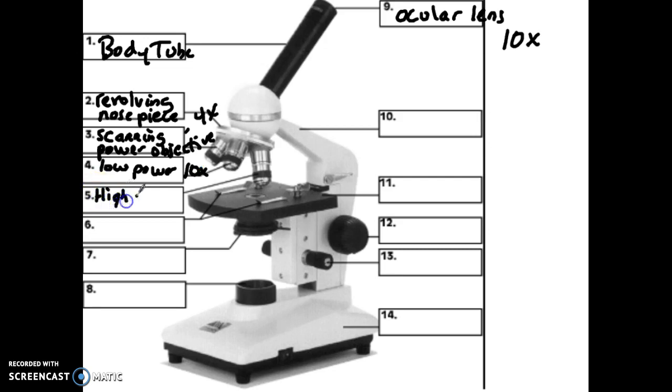They are all objective lenses as well, if you want to add that to the labeling. So you have scanning power, low power, and high power. High power most typically has a 40x power. So therefore, the total magnification with the ocular lens on the standard microscope, this would be 400 times its actual size.